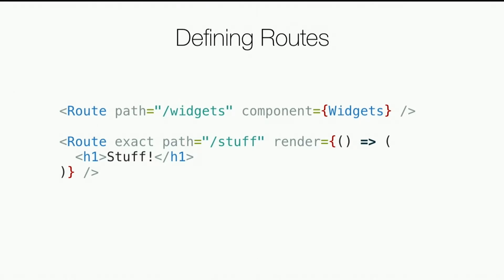You can use exact to make sure it's an exact match and not that plus whatever else. An alternative to the component prop, you can also pass a render prop where you give it a function — basically like an inline stateless functional component telling it to render something like an H1. Typically you'll use the component version, but you can also just give it a function to render something simple without defining a full component.